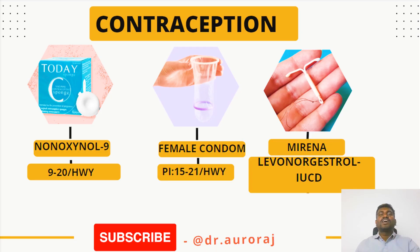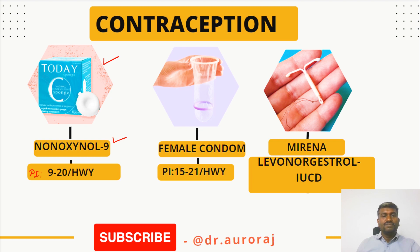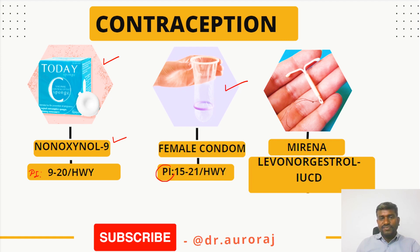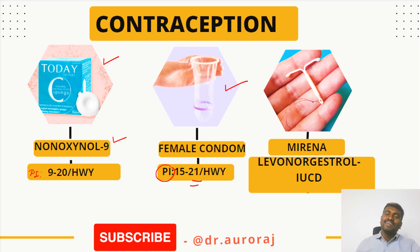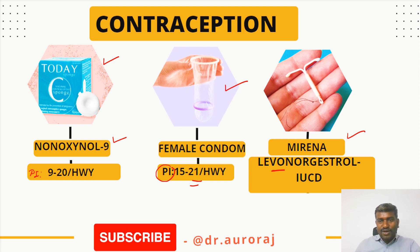Now let's talk about contraceptives. The first image is 'Today,' which contains Nonoxynol-9 — very important for the main exam. It has a Pearl Index of 9 to 20. Second, this is female condoms — not commonly used because it has a Pearl Index of 15 to 21 and is slightly more expensive than male condoms. And the third image is Mirena — a hormonal IUCD containing Levonorgestrel.